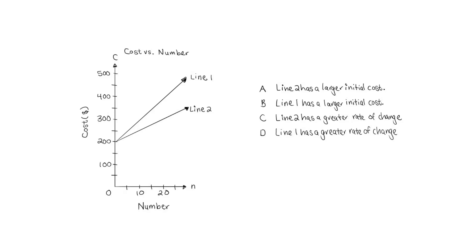In the next example, a graph shows cost versus number with two lines. The question asks which describes a difference between lines one and two. Both lines have the same initial cost of two hundred, so statements about one having a larger initial cost are false. Line two is less steep than line one, so line two does not have a greater rate of change. The correct answer is D: line one has the greater rate of change.